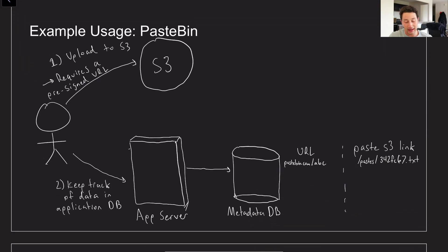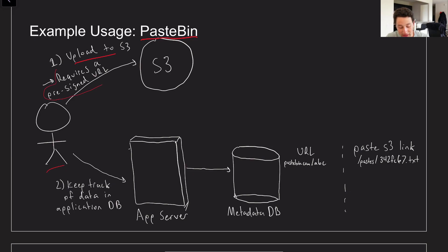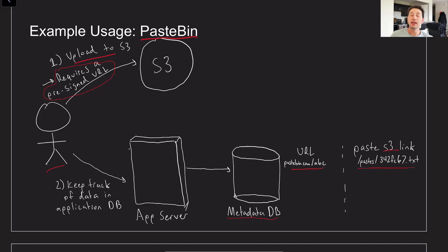A simple example usage of an object store like S3 is Pastebin. The idea is you make a paste — a bunch of text content, potentially even gigabytes. The client uploads it directly to S3 using something known as a pre-signed URL, which we'll talk about shortly. After uploading, we add a metadata row to our own application's metadata database so we can quickly figure out that, for a given URL like pastebin.com/ABC, here's the S3 link of the actual paste content. A client that needs to fetch it can then do so directly from S3. The key idea is separating your data from your metadata — metadata should not be living in S3 itself.